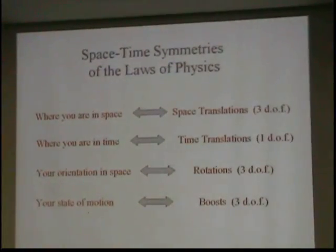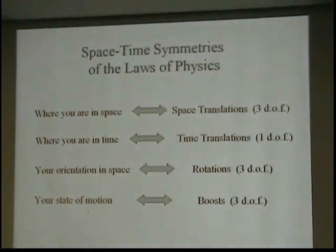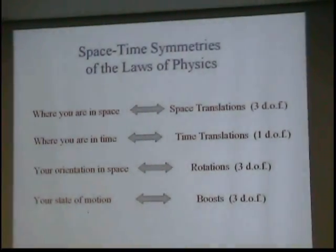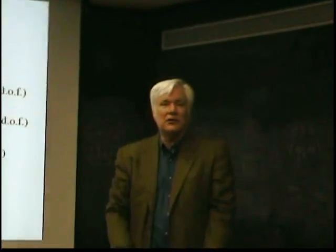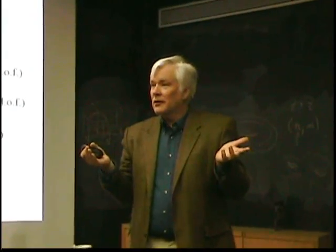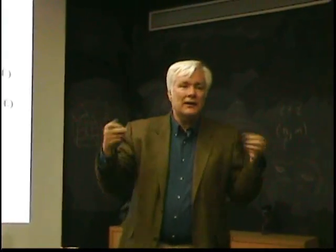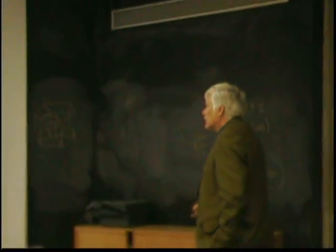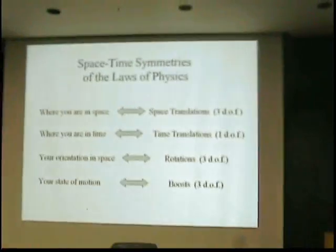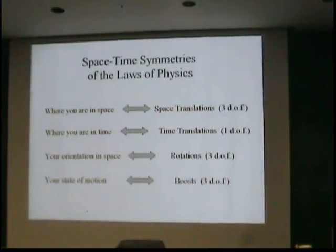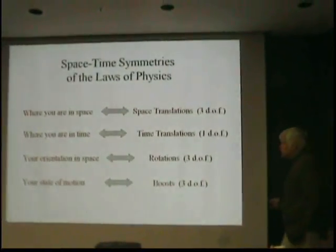So time now, as opposed to tomorrow — you do Galileo's experiment tomorrow at noon, two masses that are different, you drop them, they fall at the same rate. Or you do the experiment next week, Tuesday at midnight, and they'll fall identically. That's one degree of freedom: time. Orientation in space — three rotations.